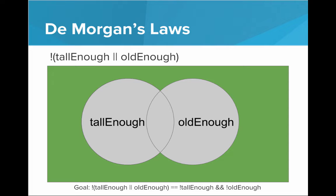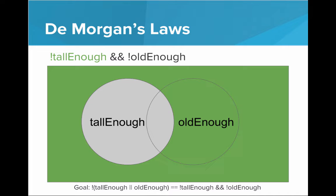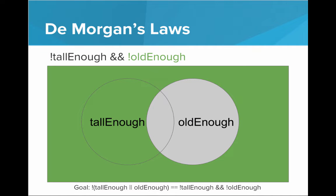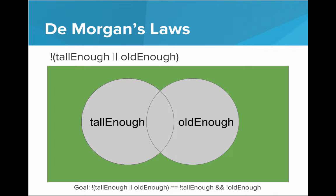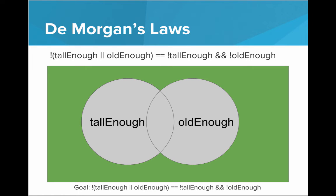Let's build the right side: NOT tall enough AND NOT old enough. The green is all the people who are not tall enough, and these are all the people who are not old enough. To AND them together, we want the group who are both not tall enough AND not old enough. If they were anywhere in either circle, they would match at least one category — but this group doesn't match either. And this is exactly the same as what we just made for NOT (tall enough OR old enough). Therefore, we see that they're the same thing.